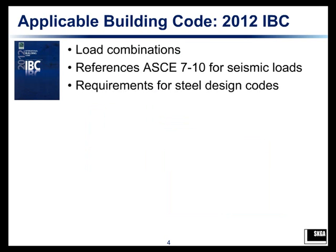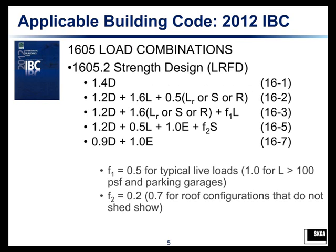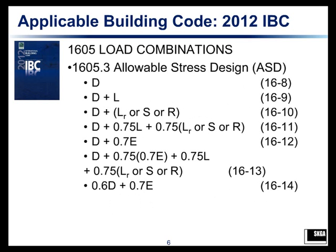Looking at the 2012 IBC, what we find in terms of what we're talking about today will be the load combinations that you use, and the fact that it references ASCE 7 for pretty much all the seismic loads — that's where ASCE 7-10 comes into play. It also has a section on the requirements for the steel design code, basically defining when the AISC seismic provisions are required. Looking at the LRFD load combinations, there are seven combinations, with the last two including earthquake or seismic effects.